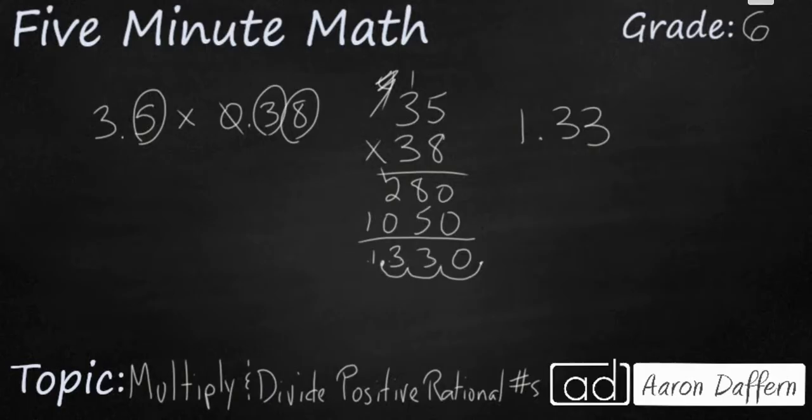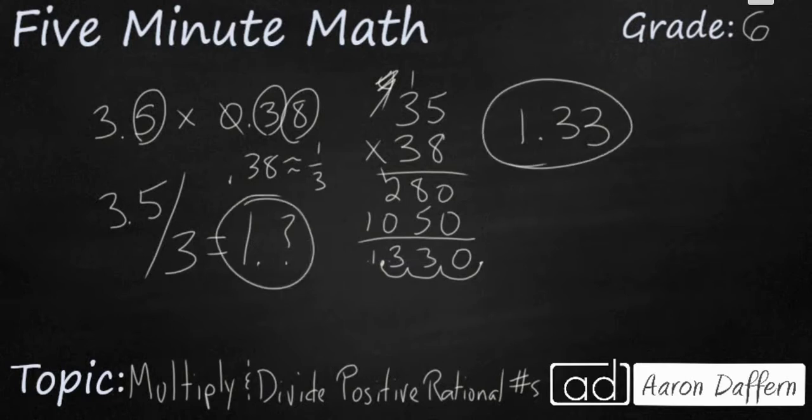If we want to verify our work, we can kind of estimate 3.5. Well, that's 3 and a half. That's pretty easy. But take a look at this 0.38. That's less than 1. That's about a third. So really what we're going to do is we're going to take about 3.5, and your 0.38 is about 1 third or a little bit more than a third. So if you take that and you divide it by 3, well, 3.5 divided by 3 is going to be a little bit more than 1, 1 point something here. And that's going to get me close to 1.33. So just using a little number sense to make sure we're correct.